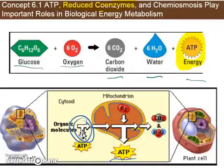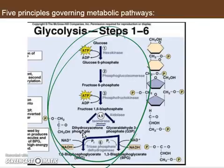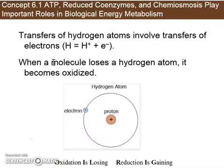So how do all of these long metabolic processes happen? Well, one of the ways that they happen is with the help of reduced coenzymes.